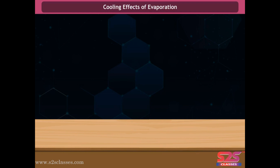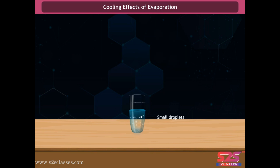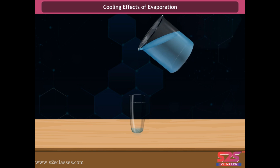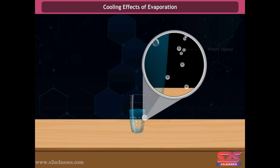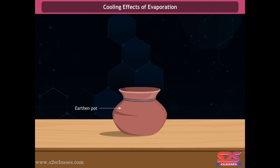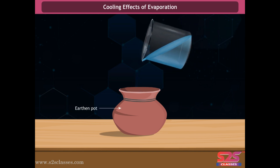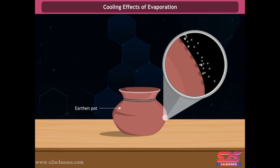Cooling effects of evaporation: take a glass and pour some cold water in it. You will observe small droplets on the surface of the glass — these form because the cold water makes the glass surface cooler, and water vapors in the air come in contact with the surface and condense into water drops. This phenomenon is known as the cooling effect. In daily life, the cooling effect of evaporation can be observed in an earthen pot, which has minute pores throughout its surface — water comes out of these pores, absorbs heat from the pot, and evaporates, keeping the water inside cool.